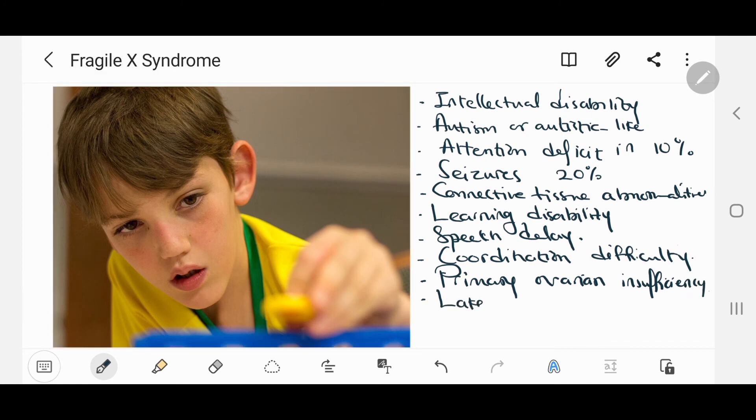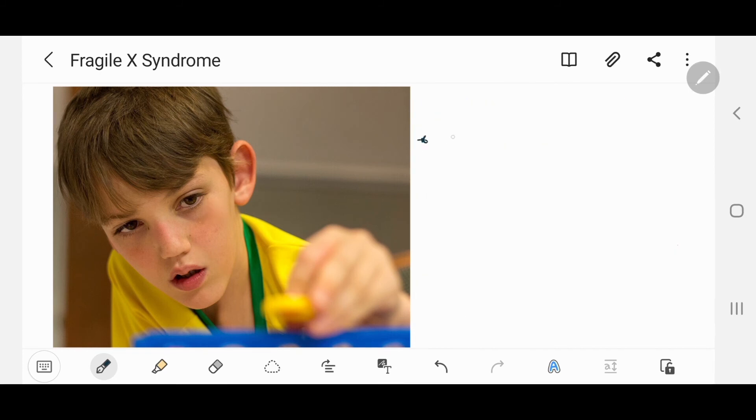If we suspect Fragile X Syndrome, we can order a chromosome microarray or CMA for short, which is now considered a first-line genetic test for the investigation of developmental disability or congenital abnormalities.